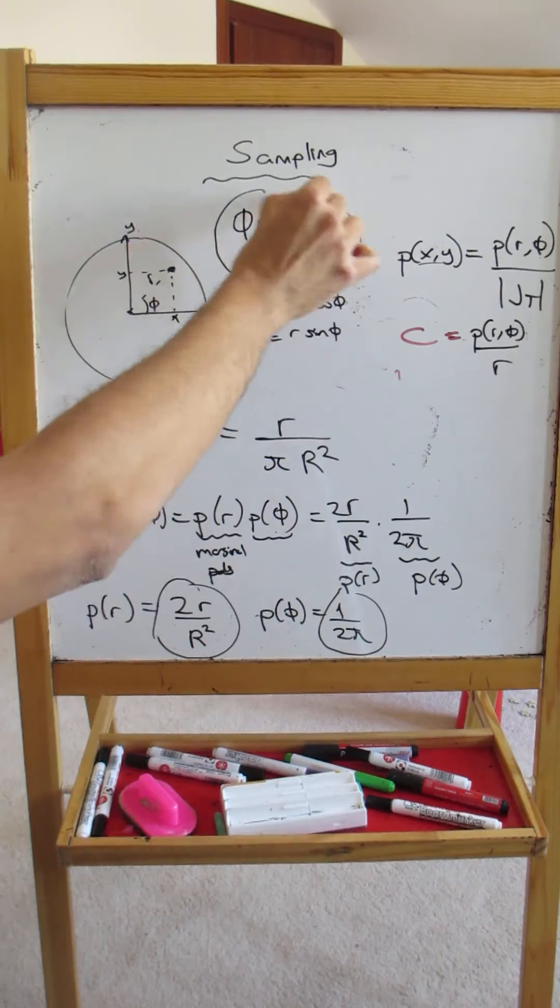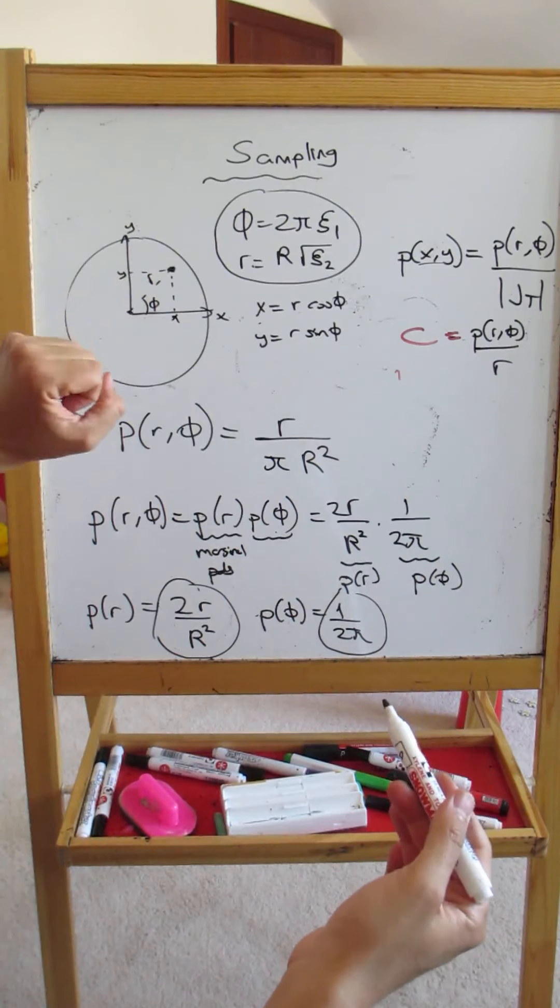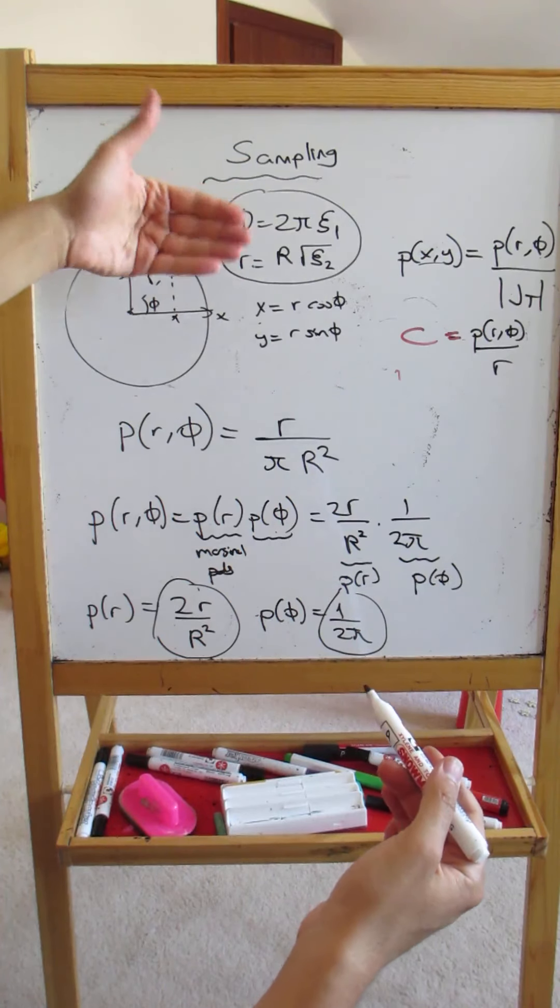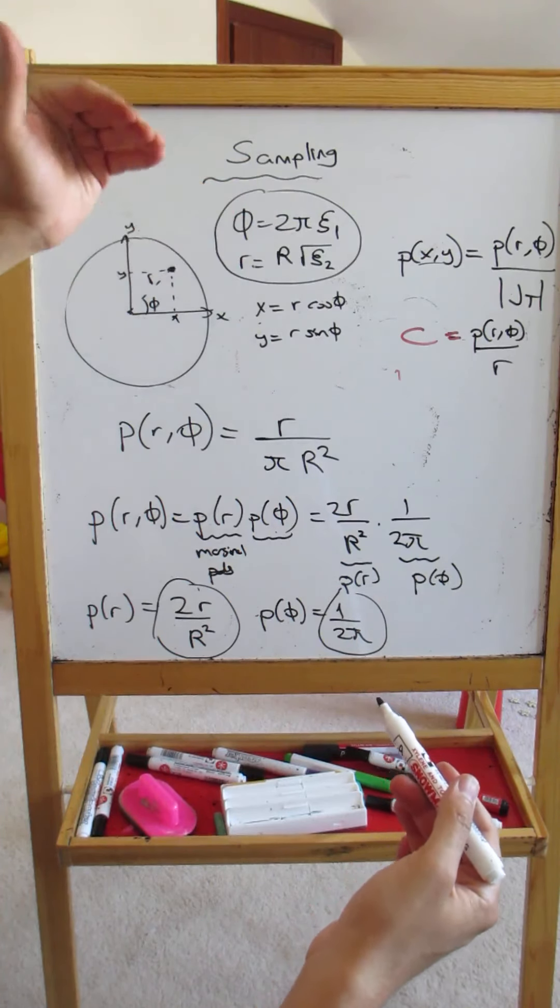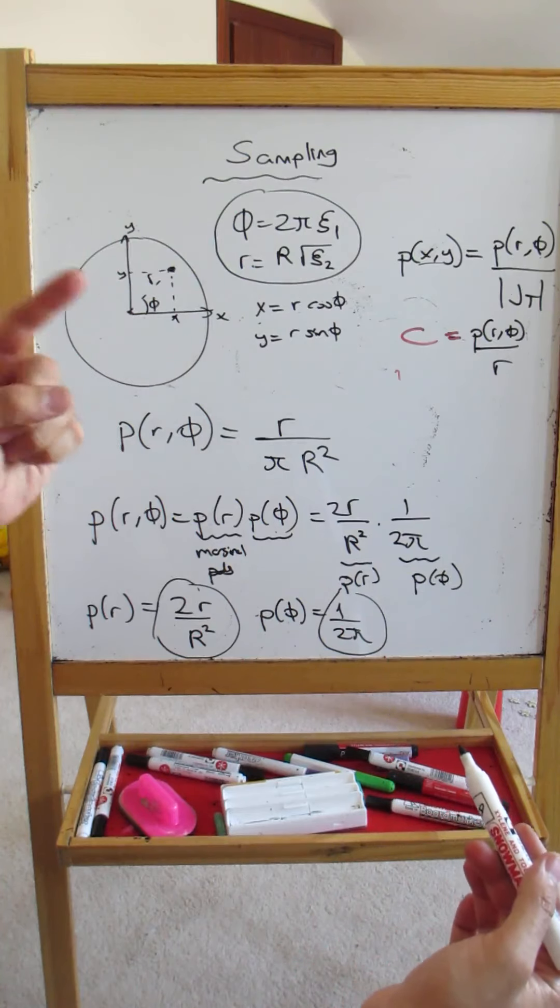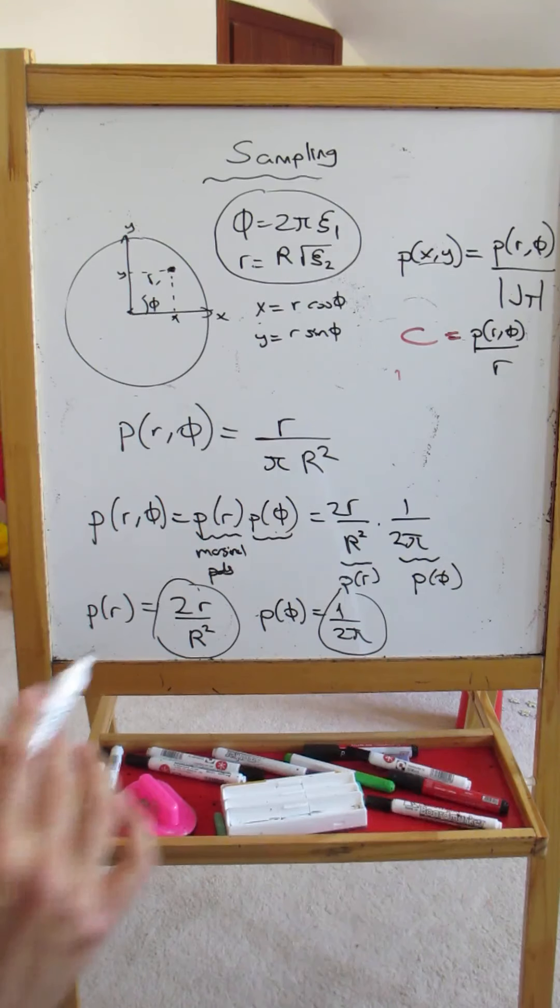So to summarize: if you sample a disk using these sampling equations, you will be sampling non-uniformly in the polar domain but you will be sampling uniformly in the cartesian domain.